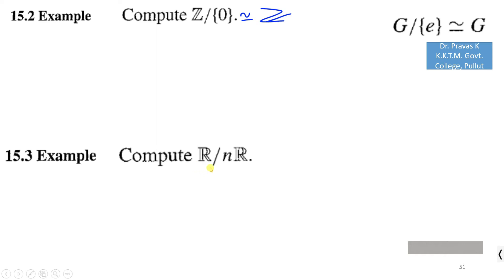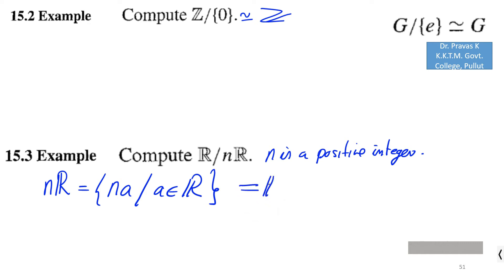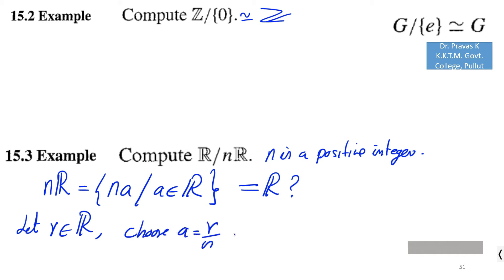Next we compute R over nR, where n is a positive integer. First, nR is the set of all multiples nA where A is an element of R. It is clearly a subset of R, but we also need to show equality. For any real number r in R, choose A = r/n, so n times r/n gives r, which means r is in nR. Thus nR equals R.